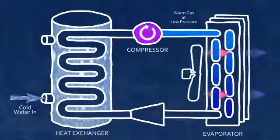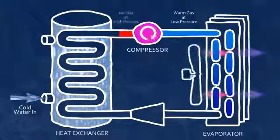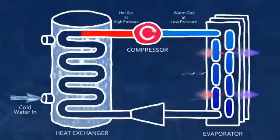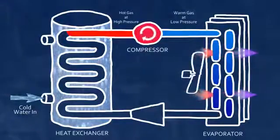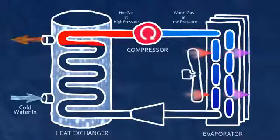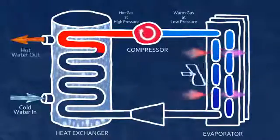The compressor next forces the now high-temperature, high-pressure gas further along the cycle into another heat exchanger called the condenser. The condenser is in contact with the water and the hot gas now gives up its heat to the colder water.